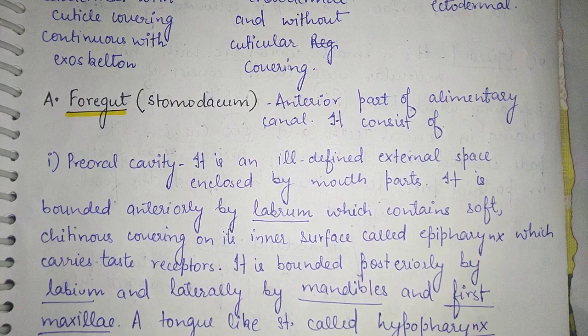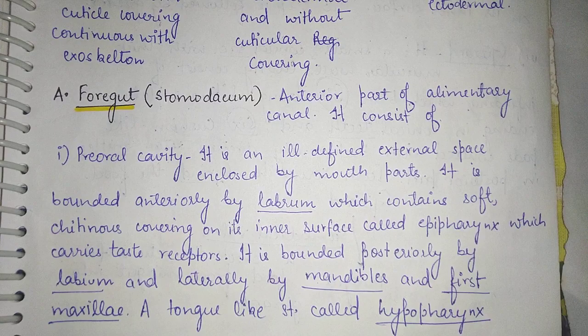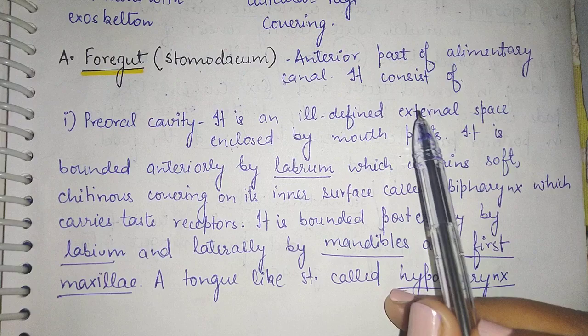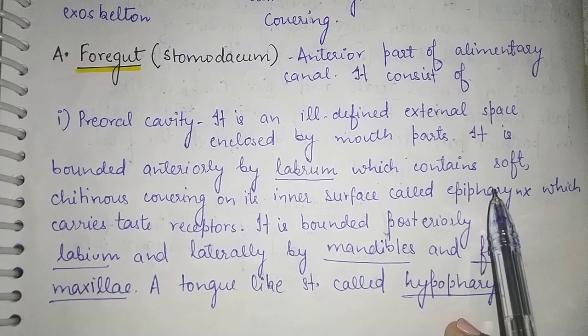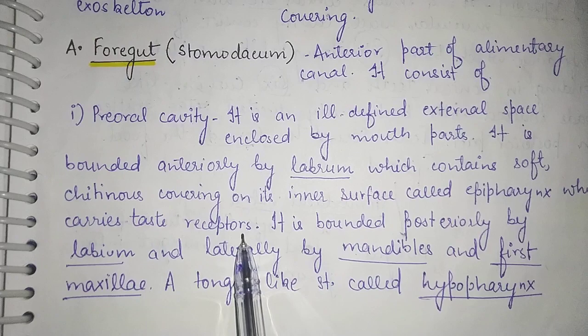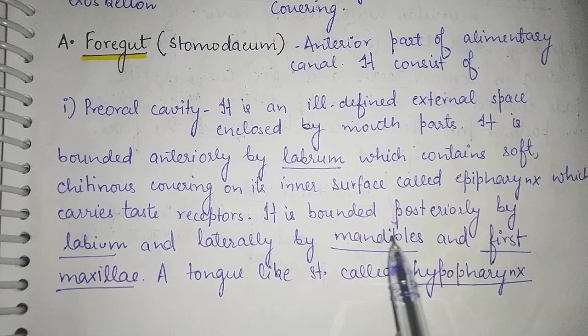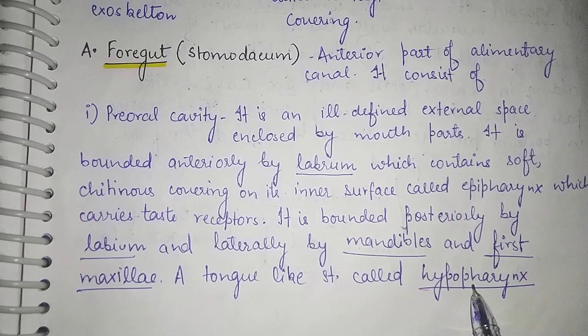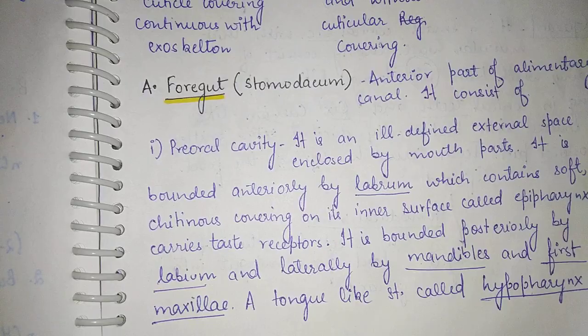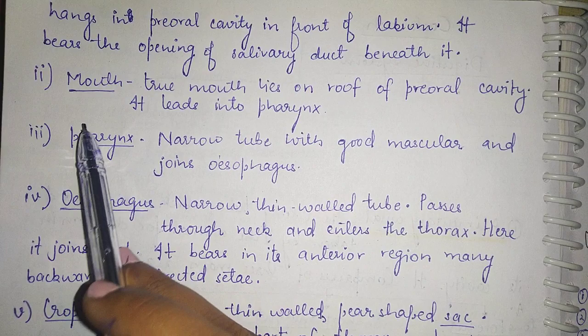The pre-oral cavity is an ill-defined external space enclosed by mouth parts. It is bounded anteriorly by the labrum, which contains a soft cutaneous covering on its inner surface called the epipharynx, which carries taste receptors. It is bounded posteriorly by the labium and laterally by the mandible and maxilla. A tongue-like structure called the epipharynx hangs in the pre-oral cavity in front of the labium. These mouth parts — labrum, labium, mandible, maxilla, and epipharynx — comprise the pre-oral cavity of the foregut.